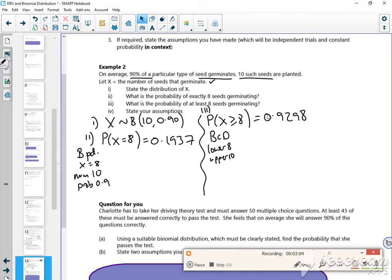Right, so part 4 is to state your assumptions. Assumptions isn't the easiest, you've got to make sure that you don't say one of them twice. So each seed has a constant probability of germinating of 90%. There. So I've done something to do with the fact that the probability is constant.